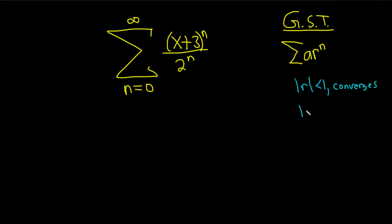The second case is if the absolute value of r is greater than or equal to 1, in this case the series diverges.